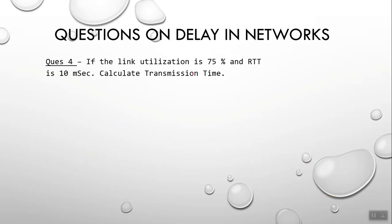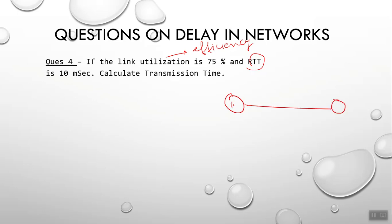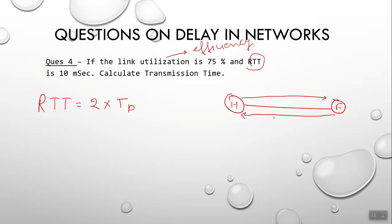Link utilization of 75% is also known as efficiency. Now about RTT: suppose you send one packet to your friend's system and the acknowledgement comes back — the complete round-trip time is known as RTT (Round Trip Time). RTT basically includes 2×tp, the propagation time.